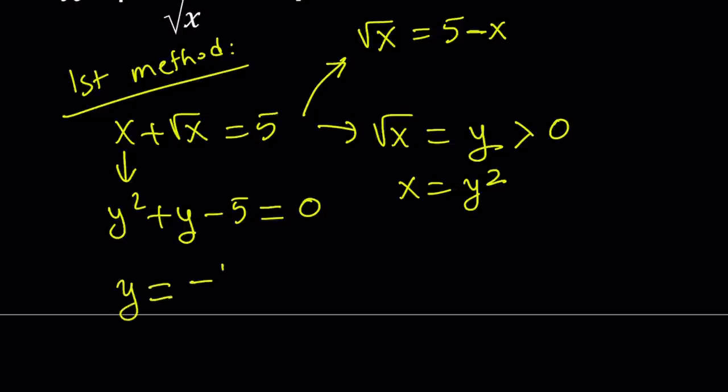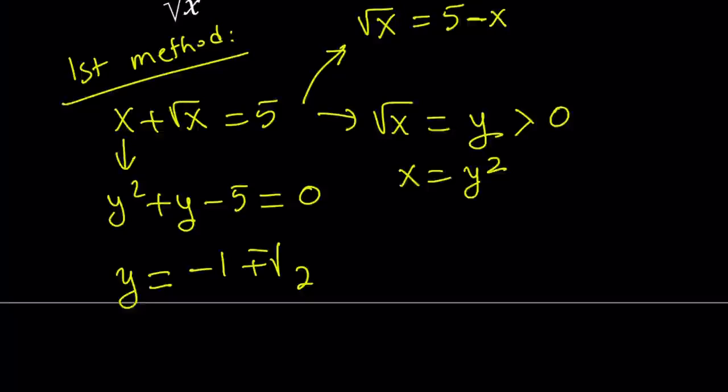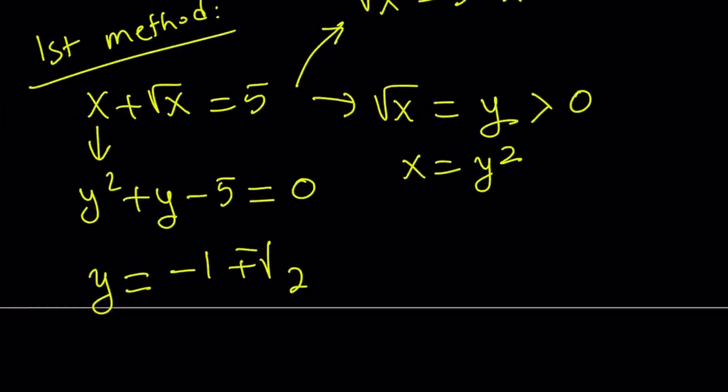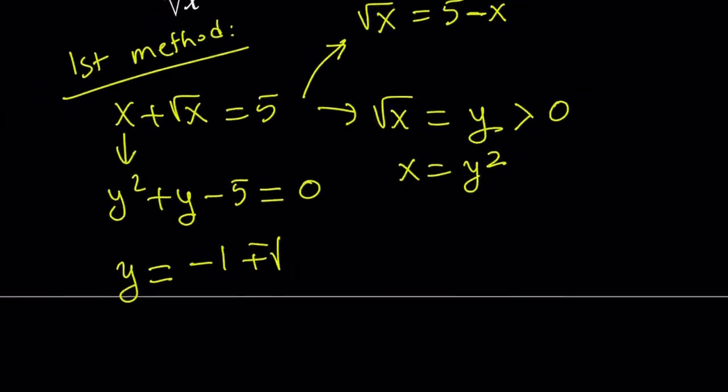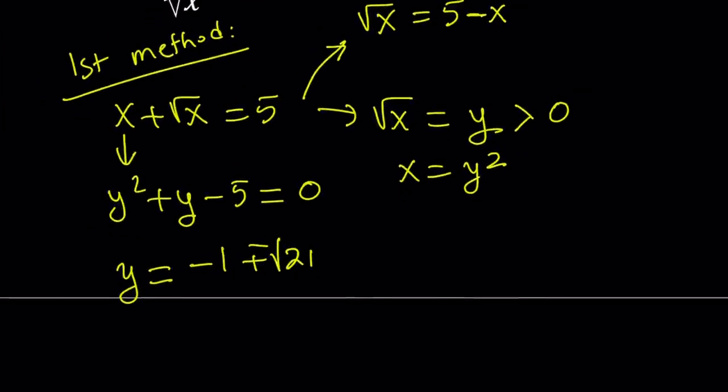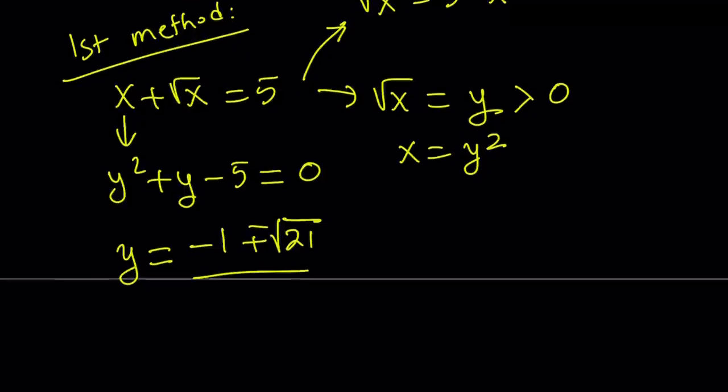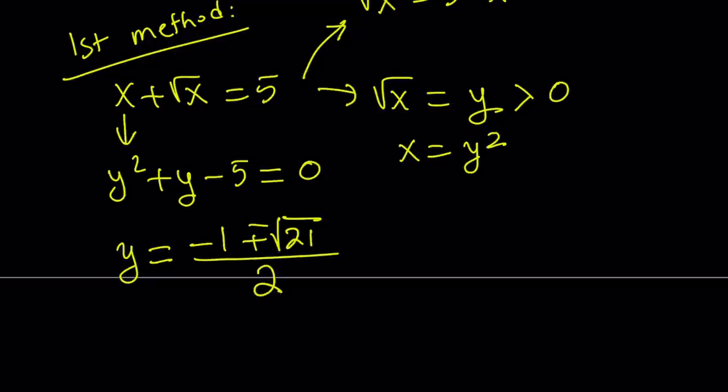It's going to equal negative 1 plus minus the square root of b squared, which is 1, minus 4ac. 4 times 5 is 20. 20 plus 1 is 21. Oh, great. Okay, so that's going to be the discriminant, or delta, whatever you want to call that, is going to be 21. And that is going to be divided by 2.